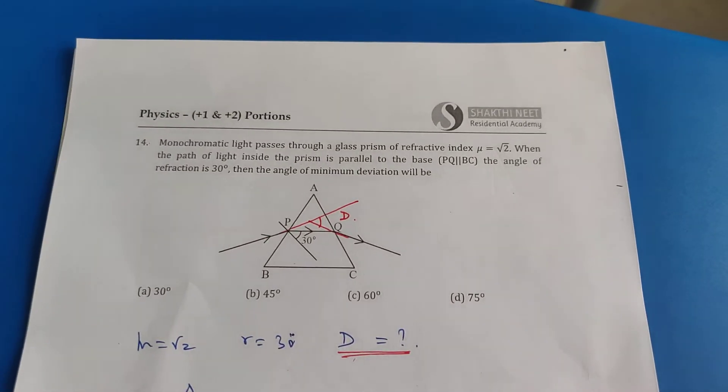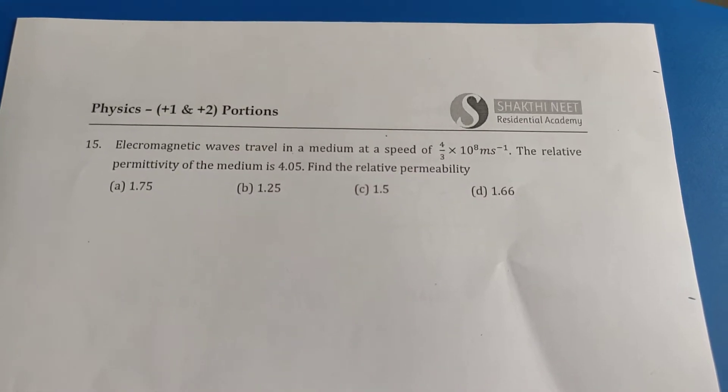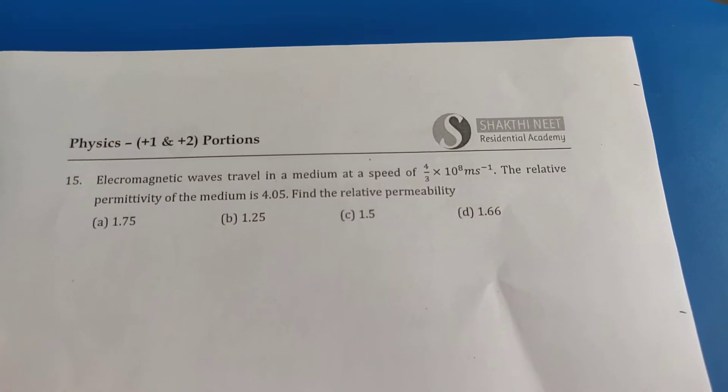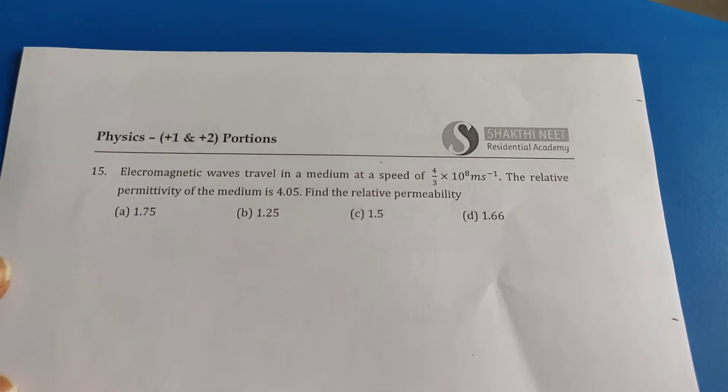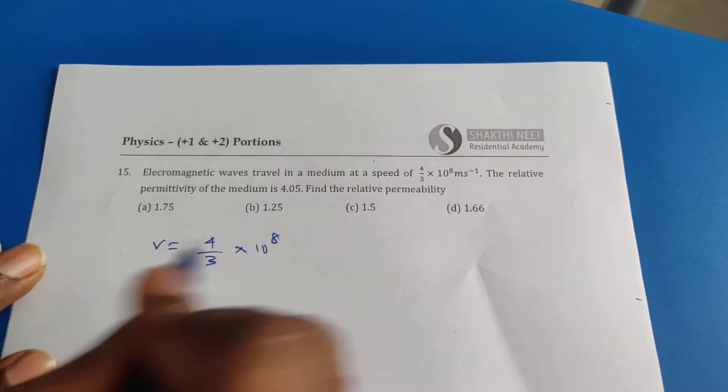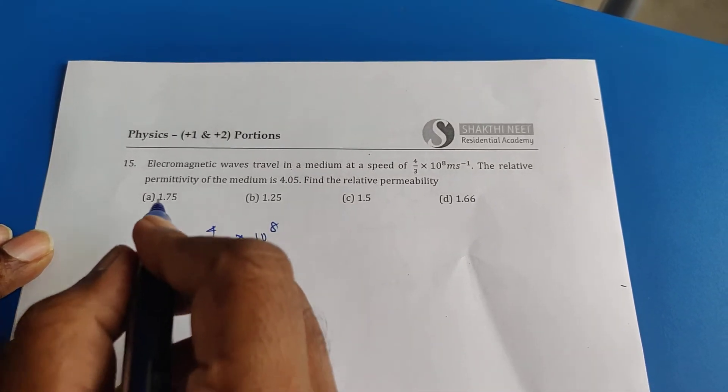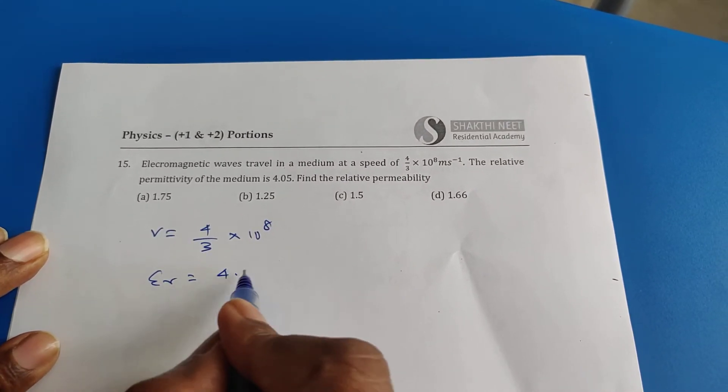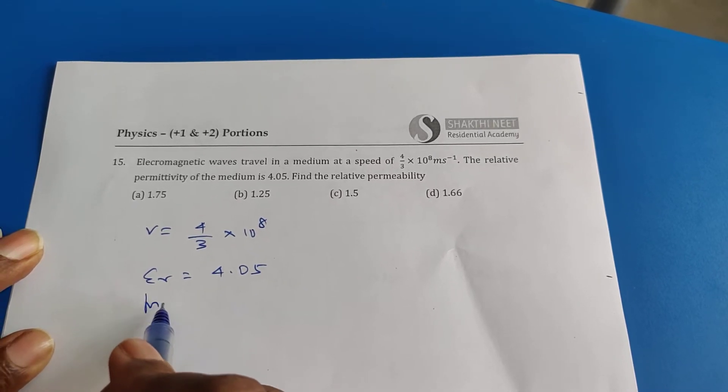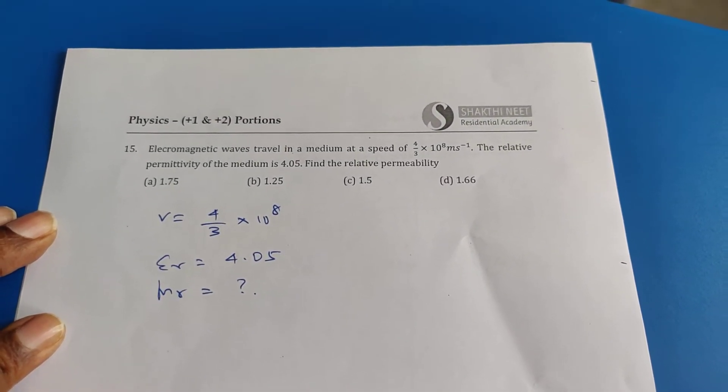Now I go to the next problem, which is question number 15. Electromagnetic waves travel in a medium at a speed of 4 by 3 into 10 power 8, the velocity of light in that particular medium. The relative permittivity of the medium is 4.05. What is relative permeability? This is the question.